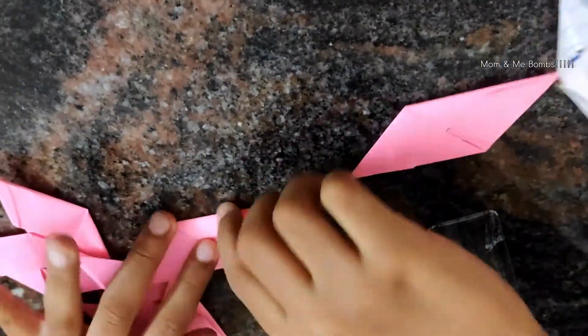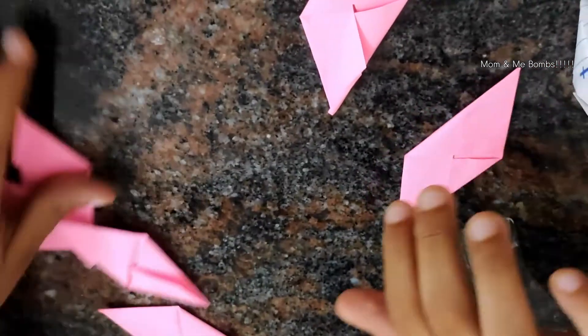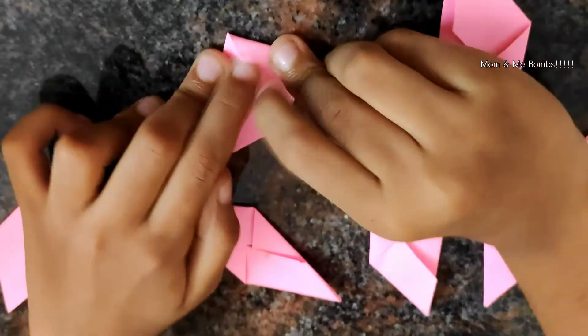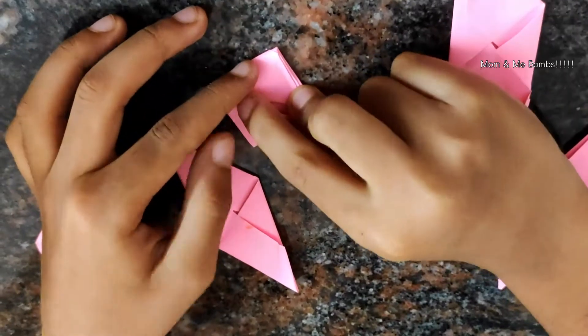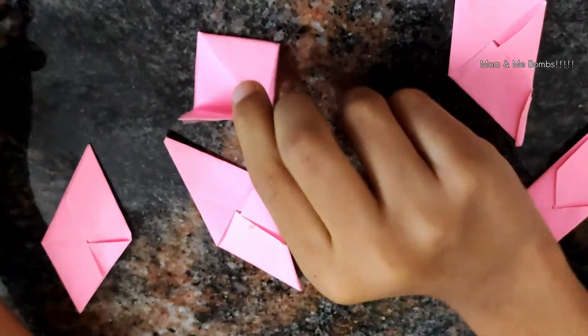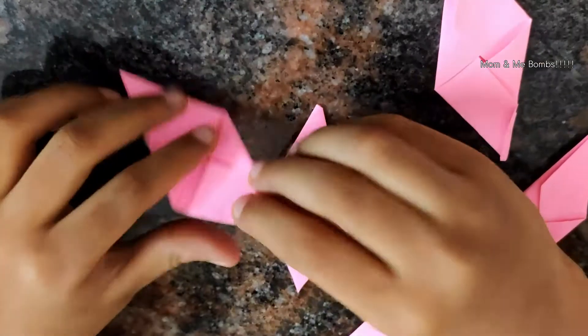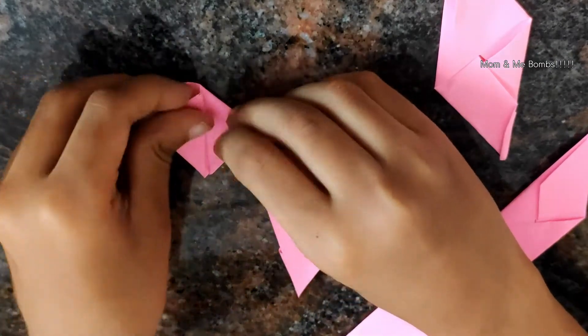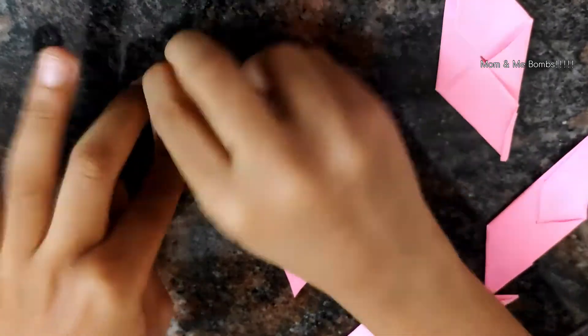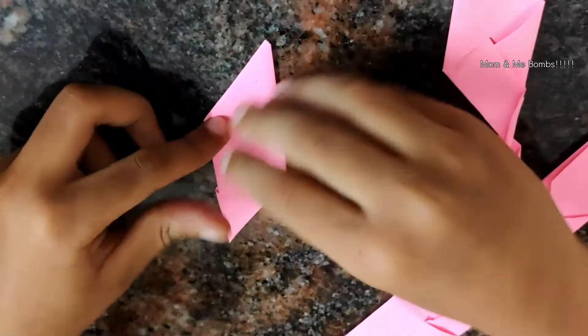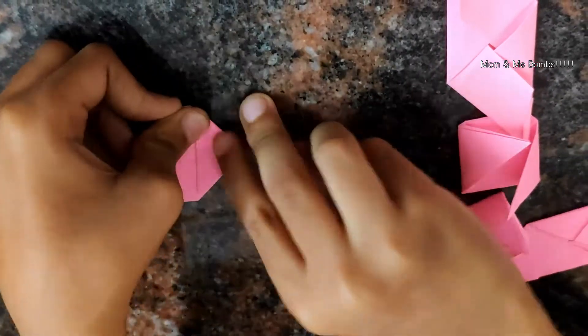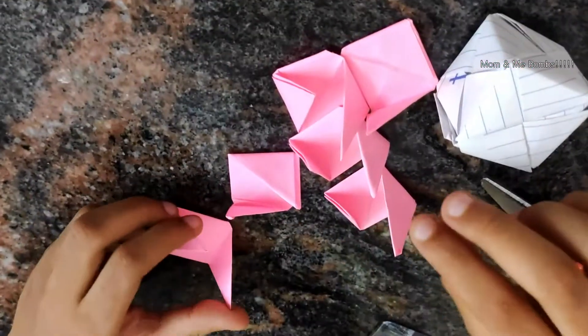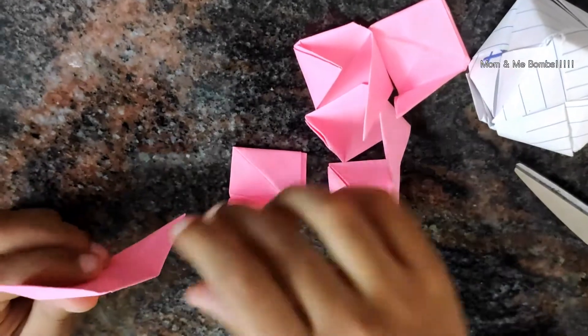Make six more copies of them like this. Now flip it over and fold it as you can see here. Do for the six of them like this. See, like this we have to do all the six of them.